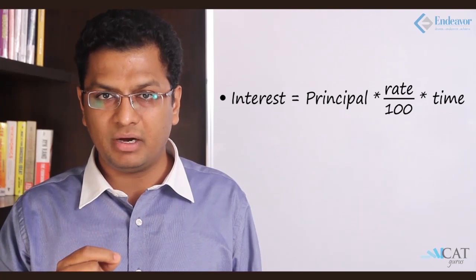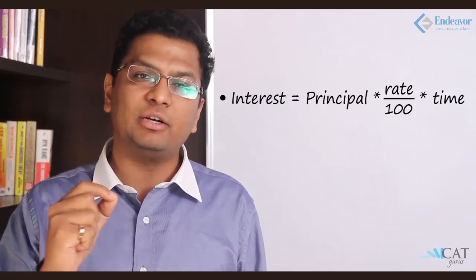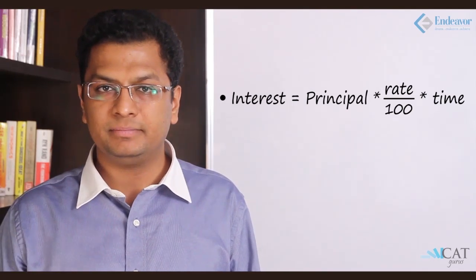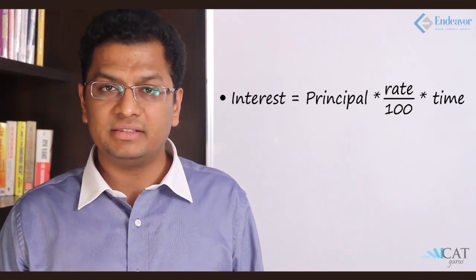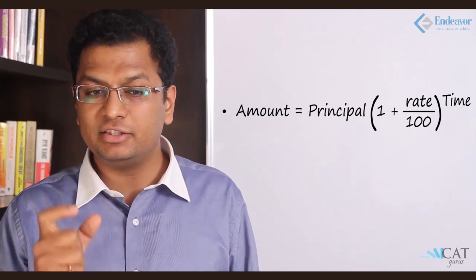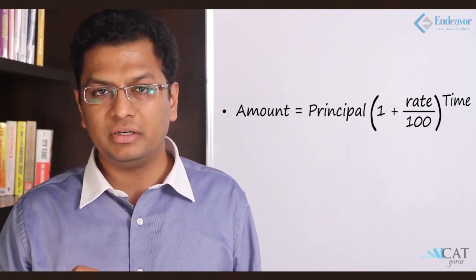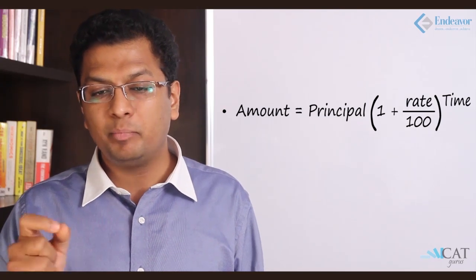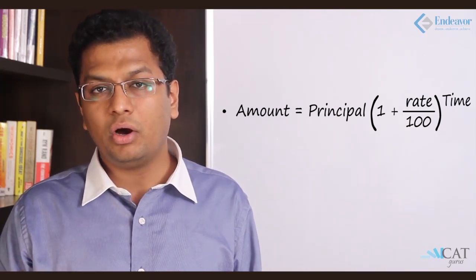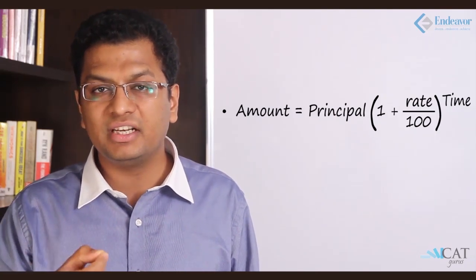Let's see how exactly the formulas work out. For simple interest, the formula is: Interest = Principal × Rate of Interest × Time. For compound interest, it's different — it's not just the interest part, but the total amount repaid, which equals Principal × (1 + Rate of Interest) raised to the power of Time.